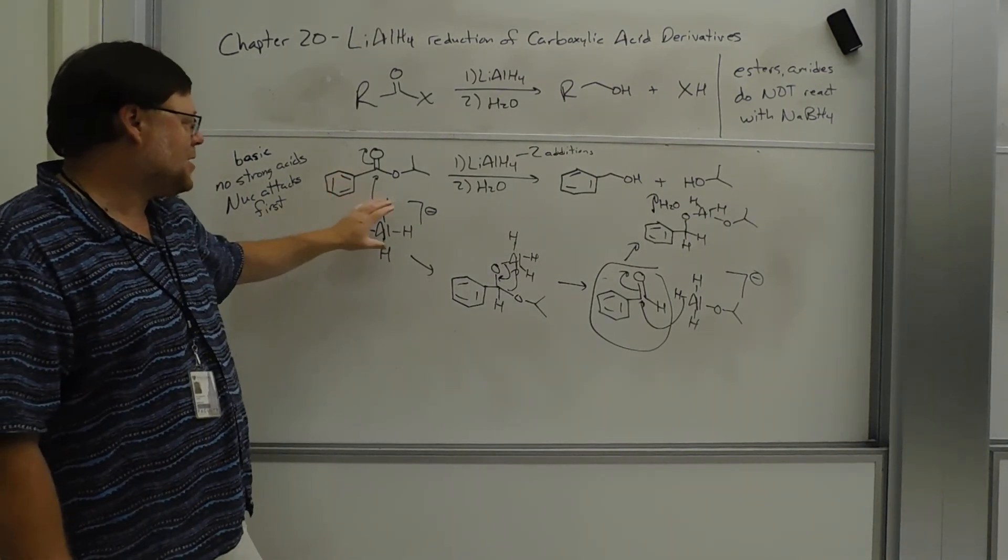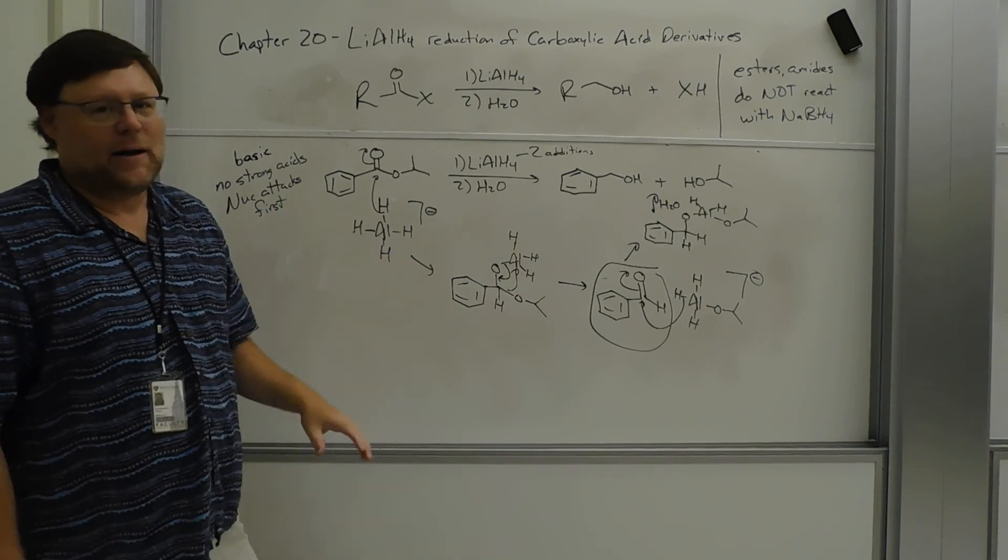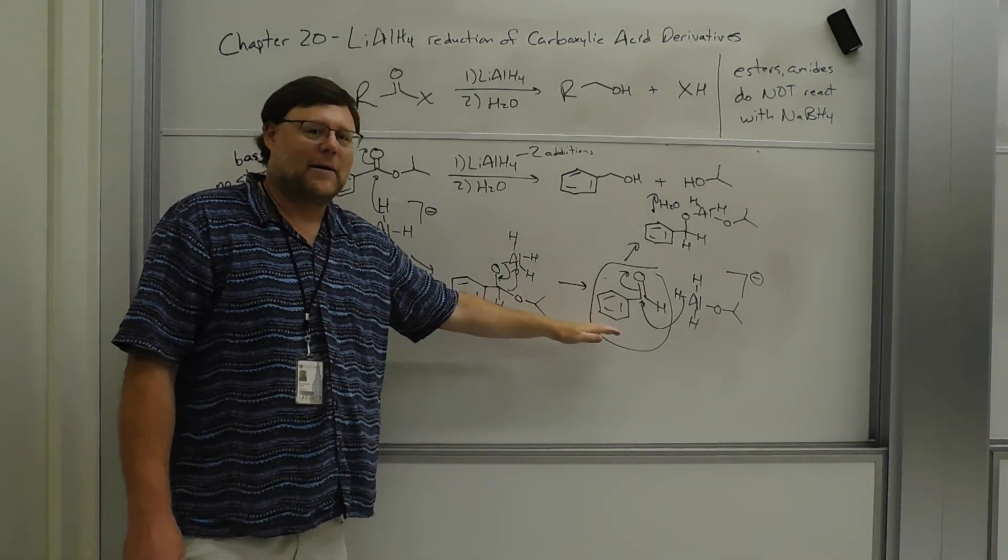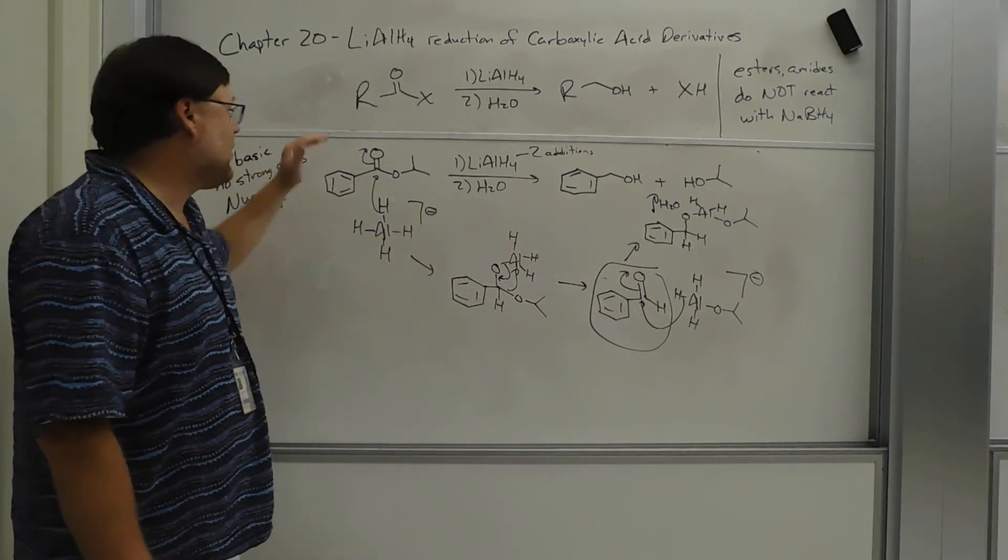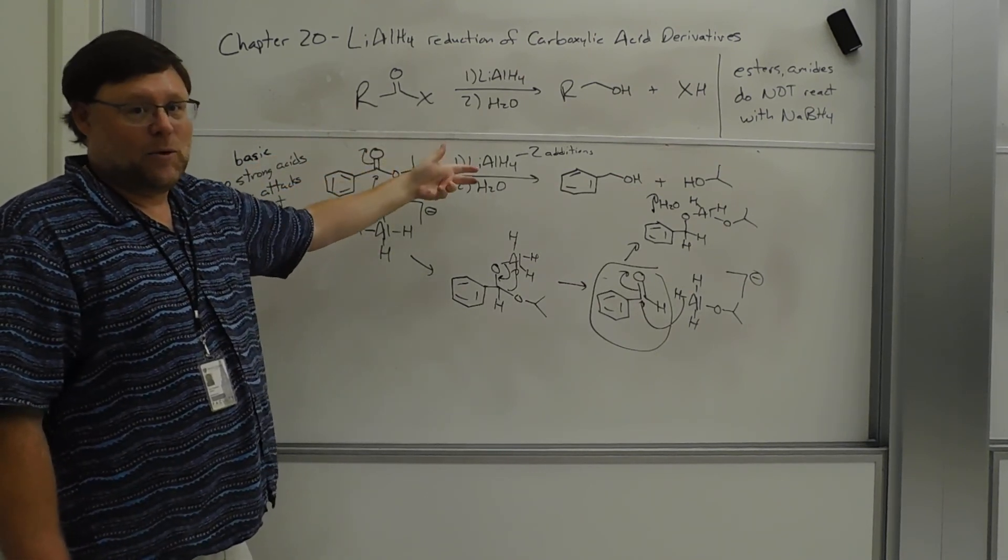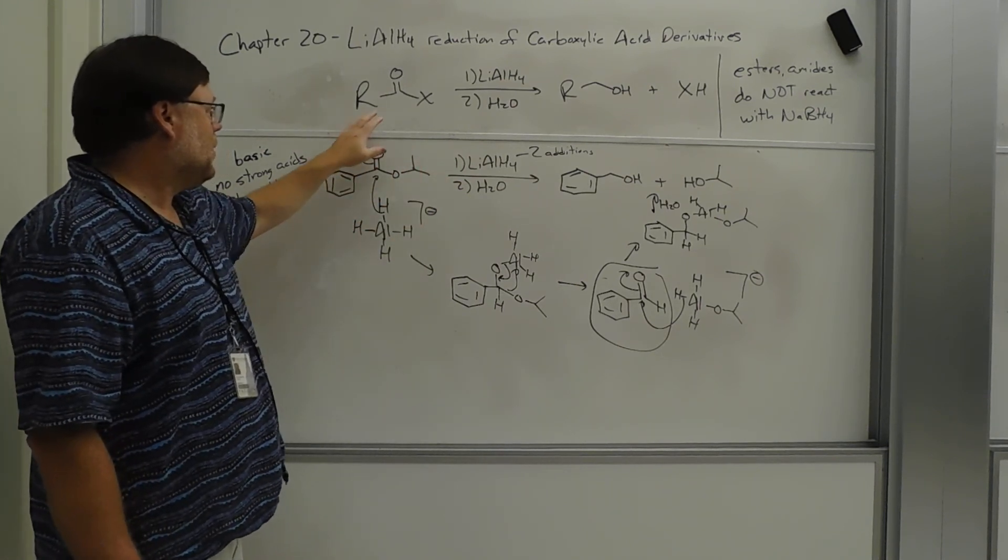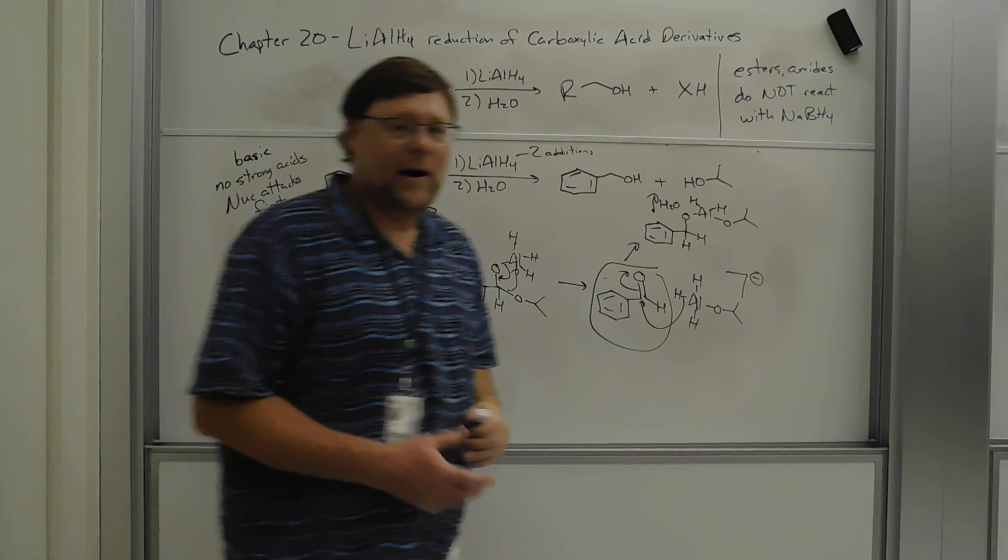All right, so there's no way to just say, well, we're going to add one equivalent, and we're only going to add in once, and we'll get the aldehyde, right? This aldehyde is going to react. So anytime you have a carboxylic acid derivative and lithium aluminum hydride, you're going to get a double reduction. You're going to get two hydrogen additions, and so that carbonyl is going to turn into a primary alcohol.